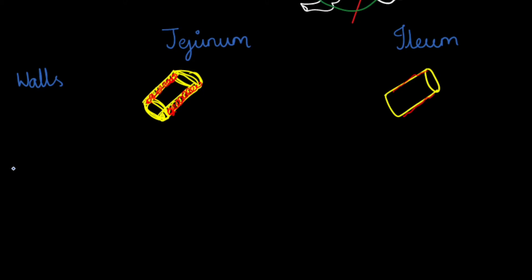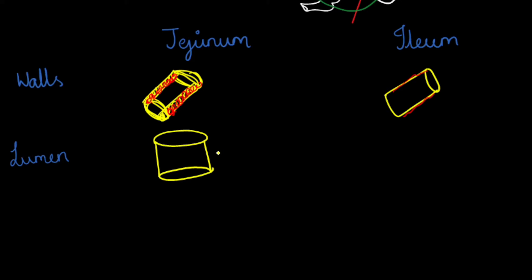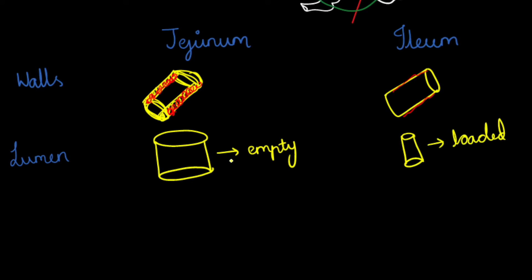Regarding the lumen — the hollowness inside the organ — the jejunum has a very wide lumen, so this part of the small intestine tends to remain empty. In case of the ileum, the lumen is very narrow, so it is always loaded. You can remember: if the lumen is wide it remains empty, and if it is narrow it remains loaded.